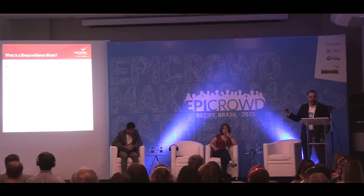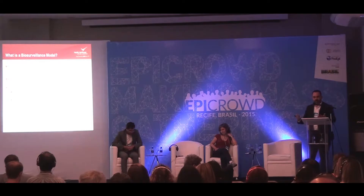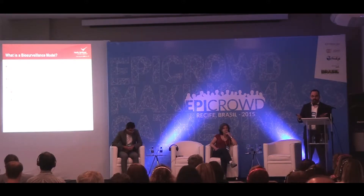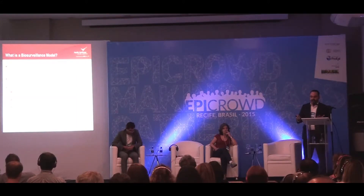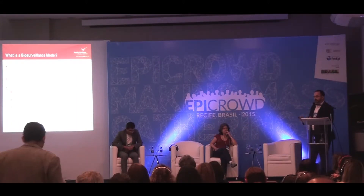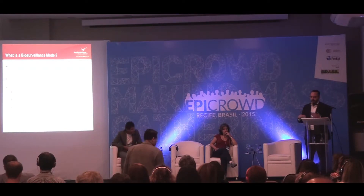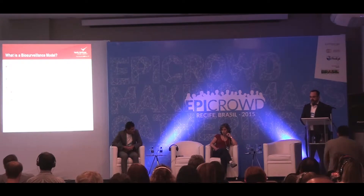What is a biosurveillance model? This is how we defined it — it's not the end-all be-all answer. It could be proactive or anticipatory, meaning used to detect a disease or to forecast. It could be to assess risk, or it could be descriptive in nature and tell us something about the disease. All of these are important factors that a model can help us answer.